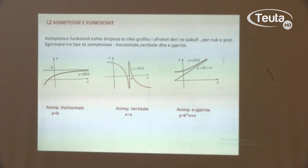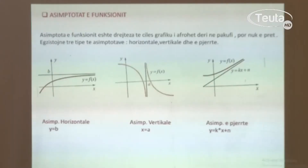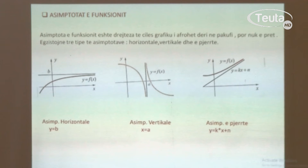Asimptota horizontale: y = b. Në grafikun e dytë kemi asimptotën vertikale. Shikoni, kemi grafikun nga të dy anët e drejtëzës x = a, por nuk kemi prerjen as në pjesën plus pafundësi, as në pjesën minus pafundësi. Dhe rastin e tretë është asimptota e pjerrët. Shikoni, është një drejtëzë, forma e përgjithshme e drejtëzës është y = kx + n, dhe kemi grafikun f(x) që i afrohet asimptotës, por nuk e pret atë.